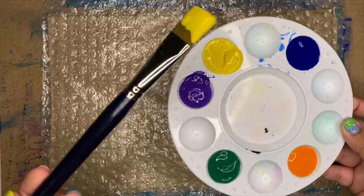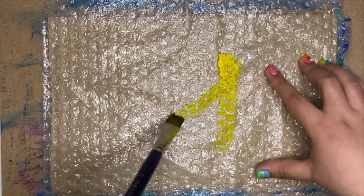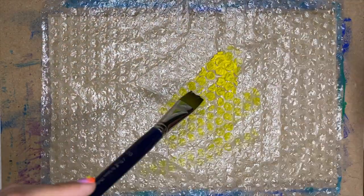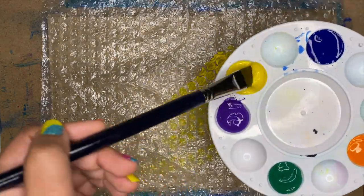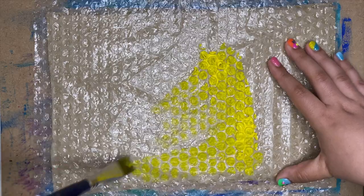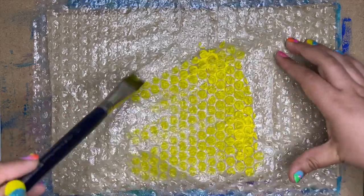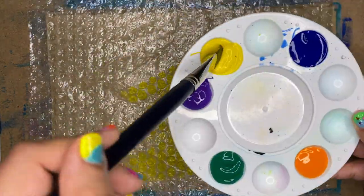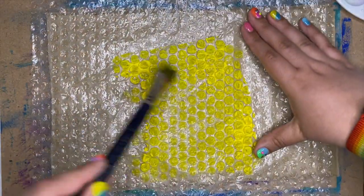Now you're going to see me dip in some yellow. You may choose any color you want. I was just picking yellow because it reminds me of the sun. You can pick a blue, pink, red, green, orange, whatever color your heart desires. You can watch me paint on the bubble wrap.